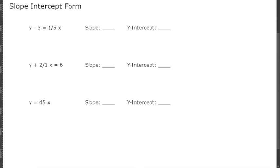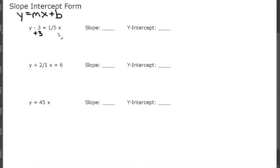Let's practice turning equations into slope-intercept form. For our first example, we have y minus 3 equals one-fifth x. Remember, our slope-intercept form is y equals mx plus b, so we need to get this equation to look like that form. We want the y by itself, so we're just going to add 3 to both sides. That gives us y equals one-fifth x plus 3. So one-fifth is our slope, and our y-intercept is 3.